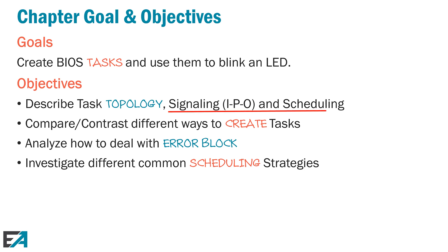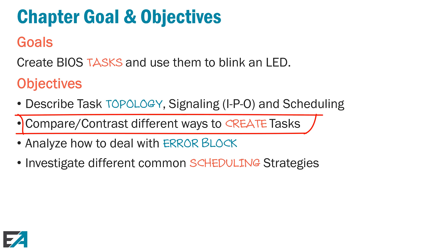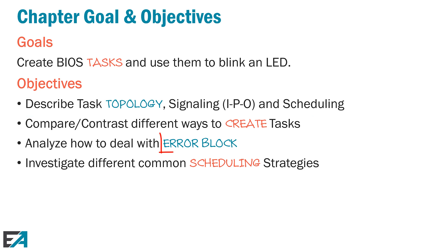We'll talk about task scheduling in terms of its group priorities and relationship to SWIs and hardware interrupts. We'll compare and contrast different ways to create tasks — you can do it statically or dynamically — and talk about why you'd choose one versus the other. When you create tasks dynamically, there is something called an error block, which is basically an error handling feature of TI-RTOS. We're going to talk about what to do with error block and what your options are.